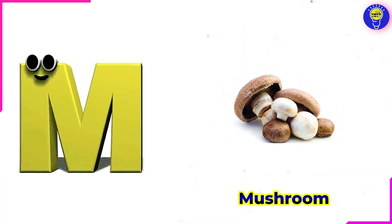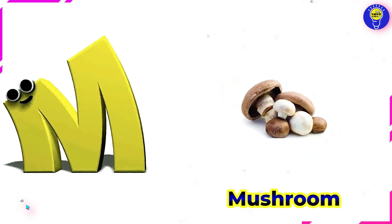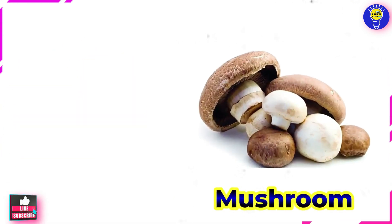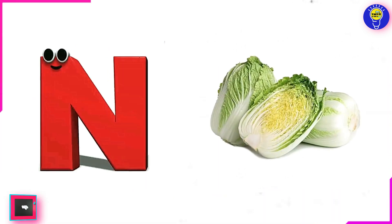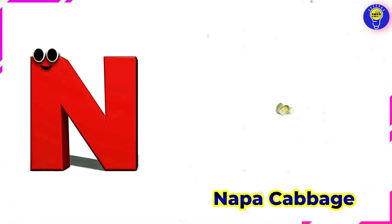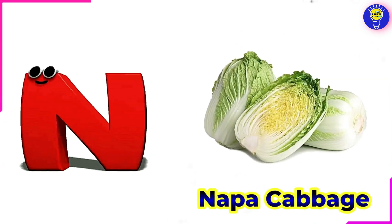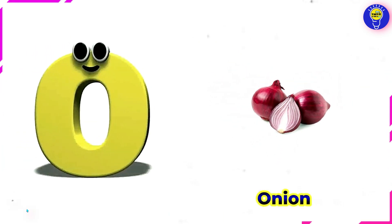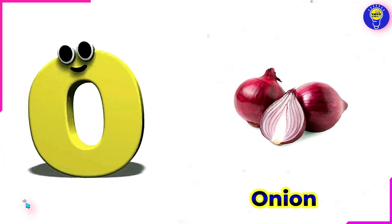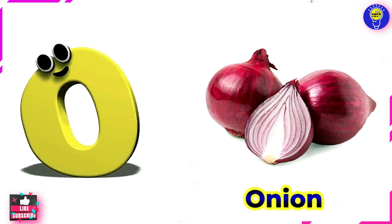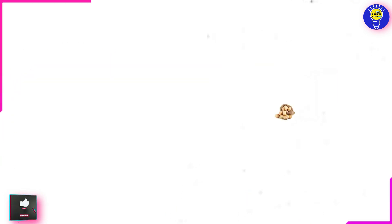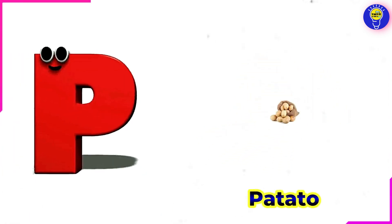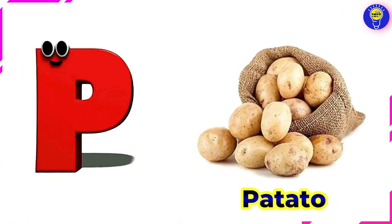M is for mushroom. N is for napa cabbage. O is for onion. P is for potato.